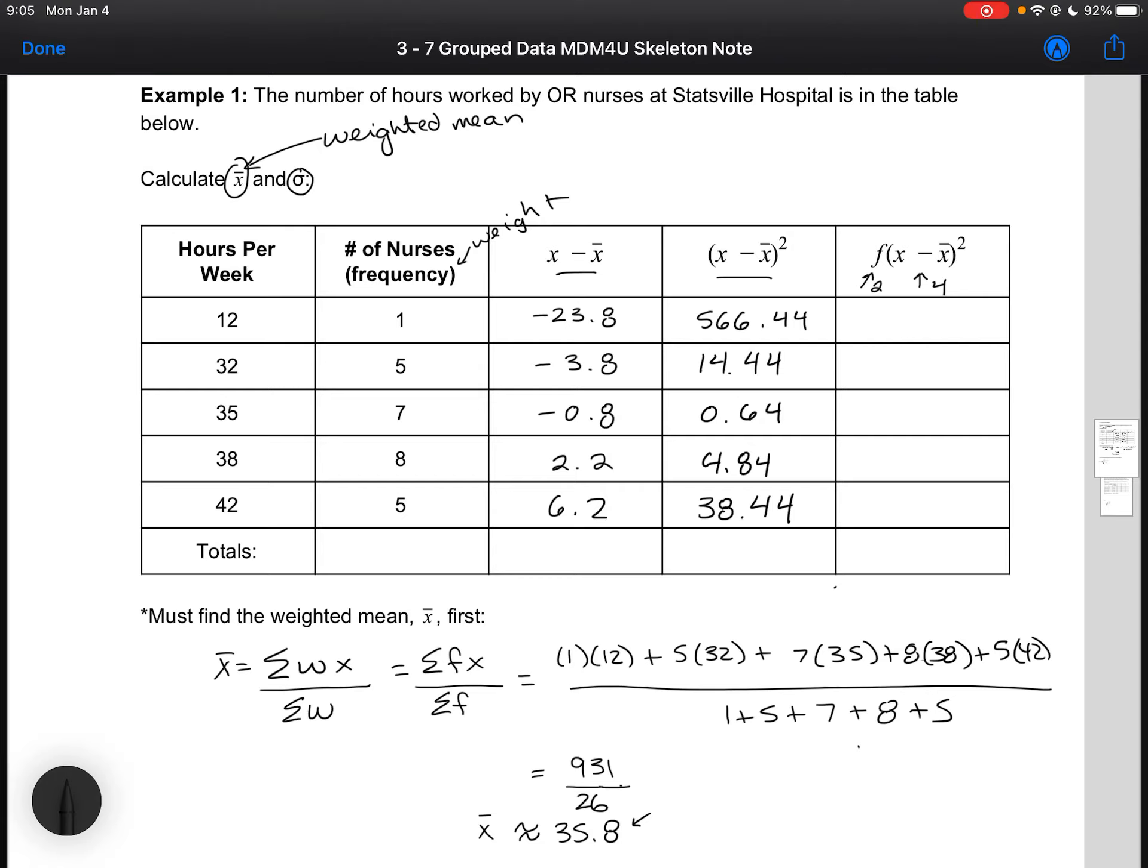In this example, you're doing a distribution of hours worked by OR nurses. So you would hope that the standard deviation is fairly low, that the nurses are working on average the same amount. If they're not, and the standard deviation is high, that is going to lead you to do some investigation into how hours get allotted, or how things get chosen.